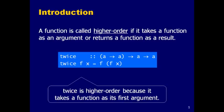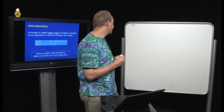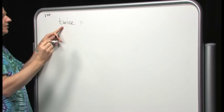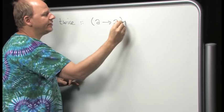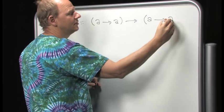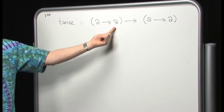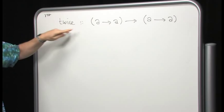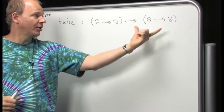Here's our good old friend, the `twice` function, which takes a function f and applies it twice. The type of `twice` is: it takes a function from A to A and returns a new function from A to A. By adding extra parentheses, it becomes painfully obvious that `twice` is a higher-order function — it's doubly higher-order because it both takes a function as an argument and returns a function as a result.